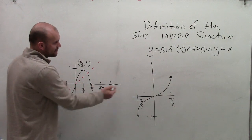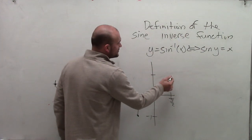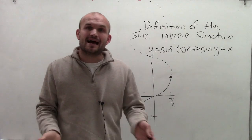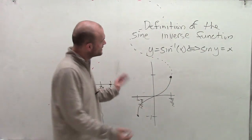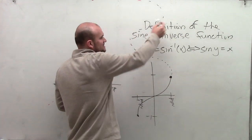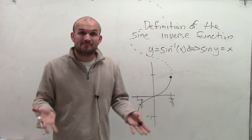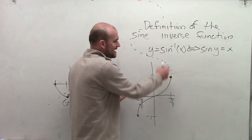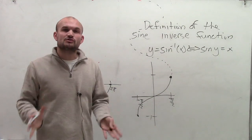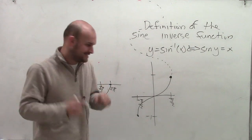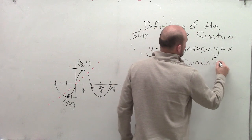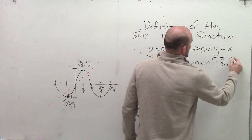Now remember, this reflected graph goes on and on forever. I continue it with a dotted line because when dealing with the inverse sine function, we're not going to include that portion. The whole reason is that if we include the rest of this function, the inverse sine function will not actually be a function — it would fail the vertical line test. So when graphing the inverse sine function, we restrict the domain to between negative pi halves and pi halves.